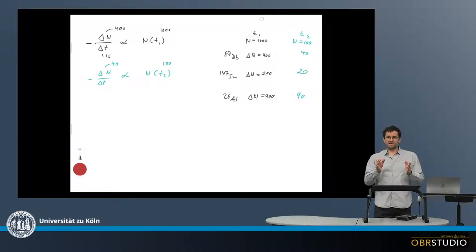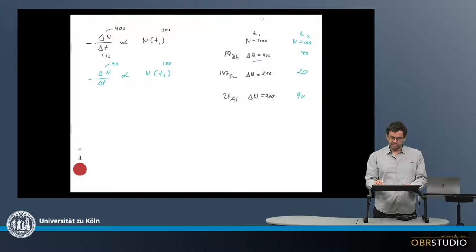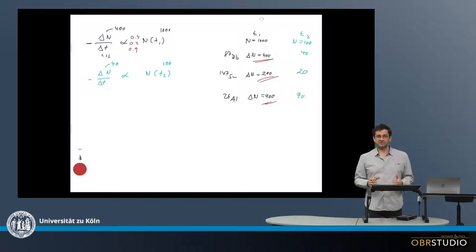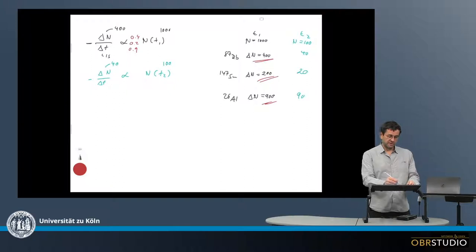There is a proportionality, but now we really want to calculate the proper amounts, which I already did, because for rubidium, 400 are subtracted, so there's a factor of 0.4. For samarium, 200 are subtracted, so there's a factor of 0.2, and aluminum is a factor of 0.9. Now these kind of factors are basically the proportionality factor that we can just call, for example, lambda.